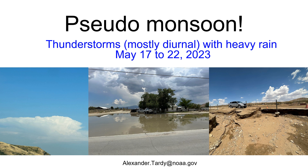Hi everyone, Alex Tardy here, National Weather Service. We just experienced a very rare event for May — that is the monsoon, or was it really the monsoon? We'll call it a pseudo-monsoon. We're going to talk about some of the activity that led up to this monsoonal-like weather pattern and how it was very similar to our traditional monsoon. As you can see in the photos here, cumulus clouds and thunderstorms were abundant, especially over the mountains and high deserts, and the impacts were true flooding from the heavy rain.